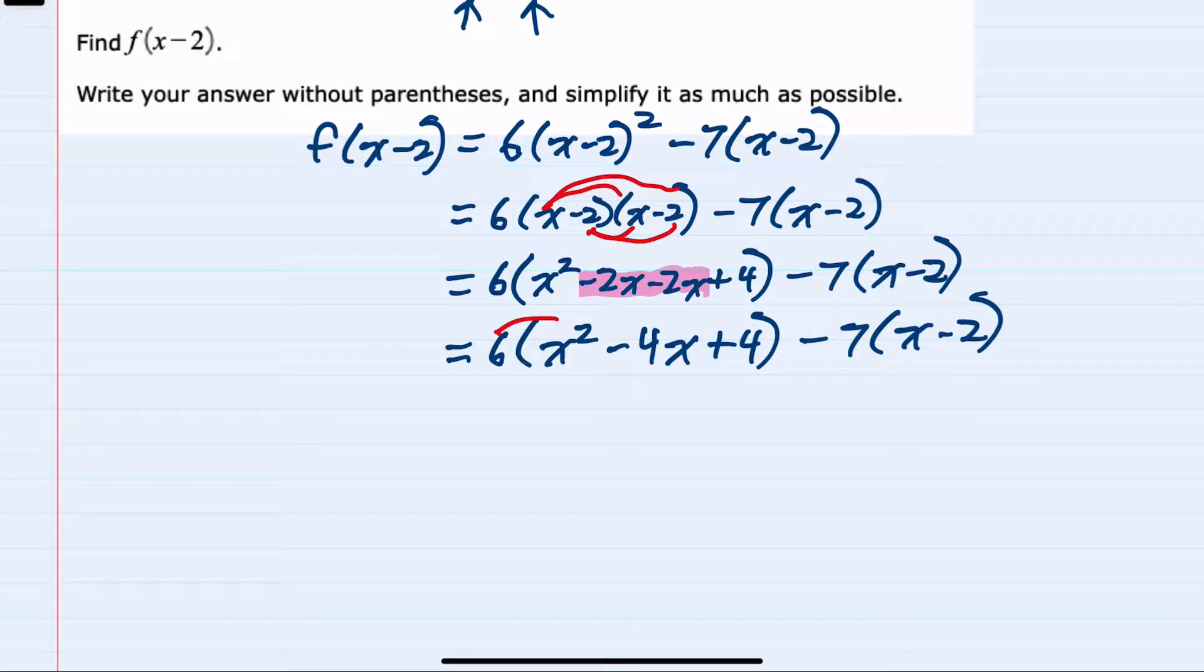So 6 times x squared will be 6x squared. 6 times a minus 4x would be a minus 24x. 6 times a plus 4 would be a plus 24. And then for the second part of this expression we can distribute the minus 7. Minus 7 times x is a minus 7x. And a minus 7 times minus 2 would be a plus 14.